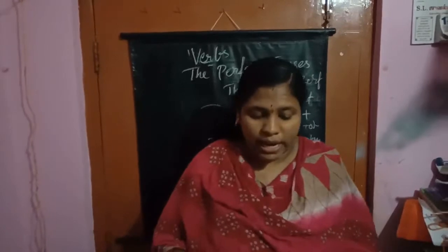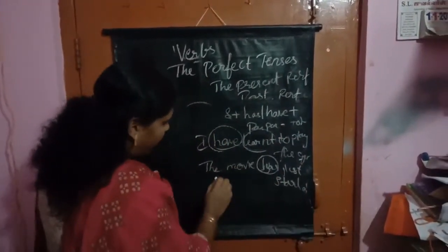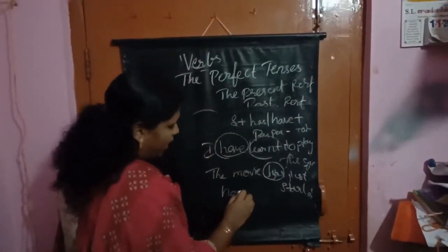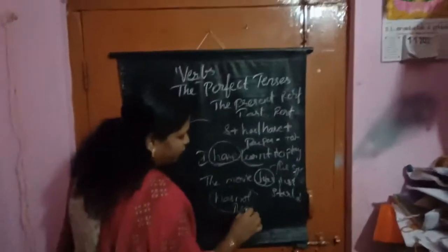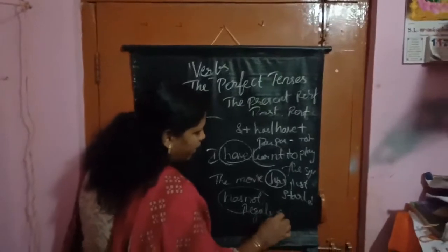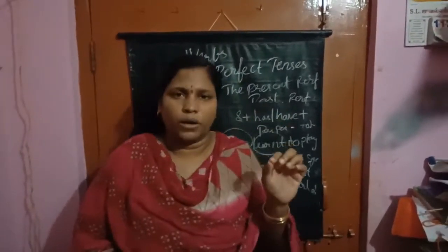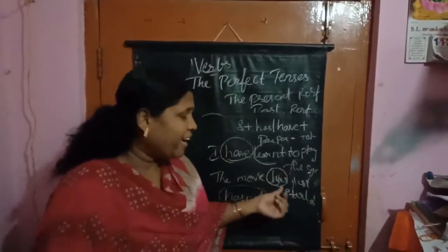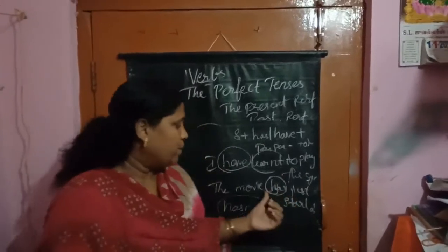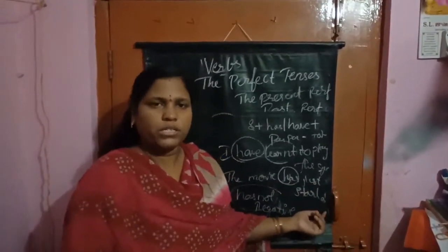The train has not arrived. Here 'has not arrived' — 'has not' — this is the negative form. Whenever we are using 'not,' it is the negative form. For example, 'The movie has just started' can become 'The movie has not started.' We can write it like that.